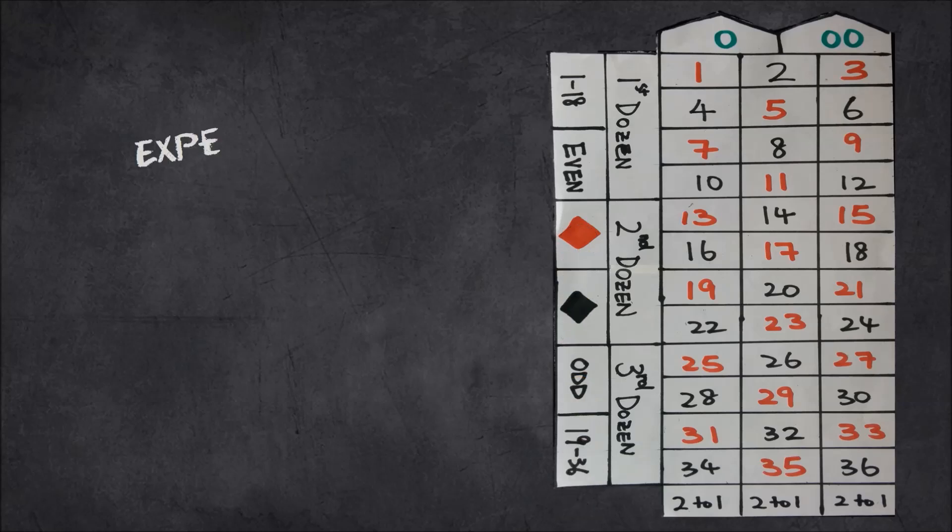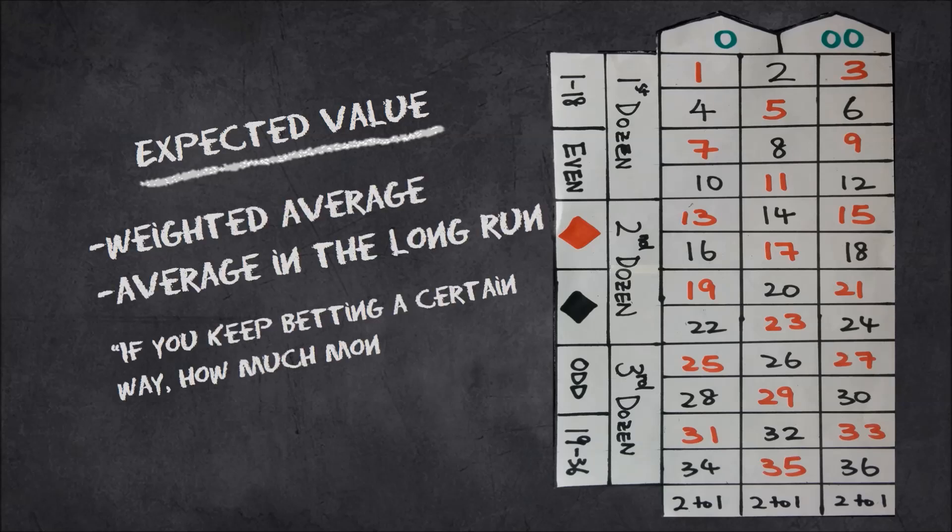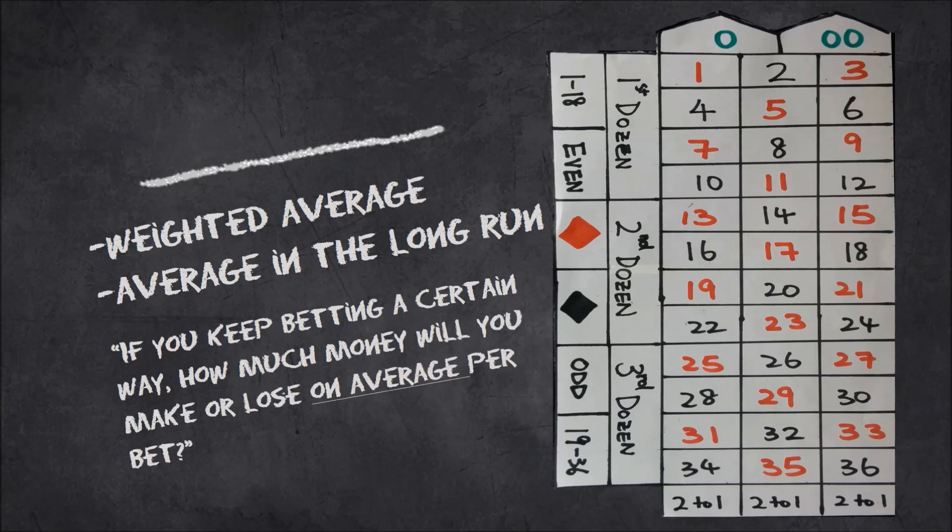Well, it turns out there is. In math, we use something called the expected value. That's kind of like the weighted average or the average in the long run. So if you keep betting a certain way, how much money will you gain or lose on average per bet?